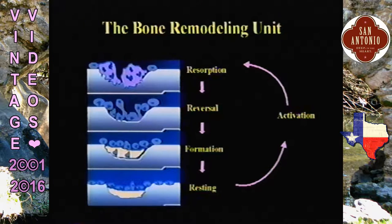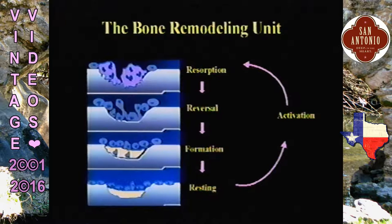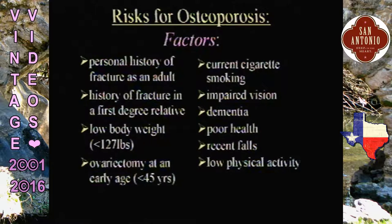There's always osteoclastic bone resorption first, and you need that in order to then form new bone. This is important to know: all therapies we have for osteoporosis prevention and treatment affect the osteoclast. They don't form new bone except for one that just came out recently in the New England Journal. In addition to all those different diseases, there are a number of factors that put someone at risk for osteoporosis.